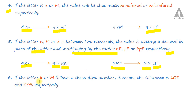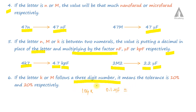If the letter K or M follows a three-digit number, it means the tolerance is 10% and 20% respectively. For example, 104K means 0.1 microfarad with plus or minus 10% tolerance.